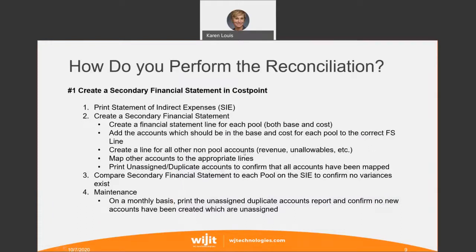After you've created the lines for the pool, base, and allocation, you're going to create another line for all other non-pool accounts — just to make sure that you've mapped all the accounts. Revenue, unallowables, and other accounts have nothing to do with your indirect rate costs, so you can just group them together. Then you run the Print Unassigned Duplicate Accounts report to confirm that all accounts have been mapped. Cost Point has a utility that will let you know if you've duplicated accounts between pools or if there are accounts you haven't assigned.